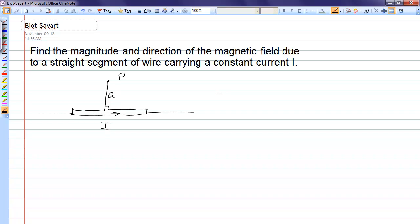Now the equation that we want to use to do this calculation is the Biot-Savart law which tells us that the magnetic field is equal to the permeability of free space times the current divided by 4π times the integral of dl cross r-hat over r².